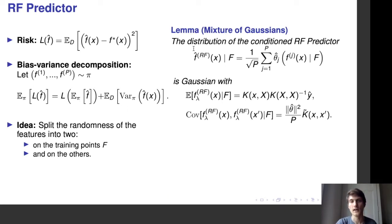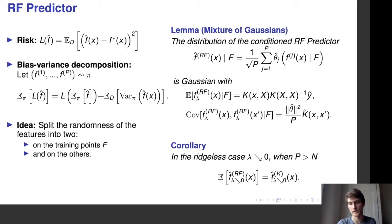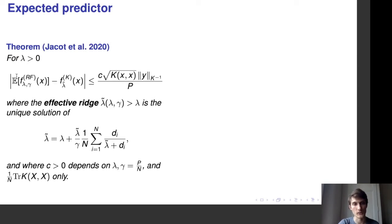This leads to a lemma showing that the distribution of the random feature predictor conditioned on the data matrix is Gaussian with an expectation and covariance that we describe. In the overparameterized ridgeless regime, the random feature predictor always interpolates the data, so ŷ equals y. This implies the expected random feature predictor equals the kernel ridge predictor, confirming it is an unbiased estimator. Outside this regime, we get the implicit regularization: the expected random feature predictor is close to the kernel predictor with the effective ridge λ̃.